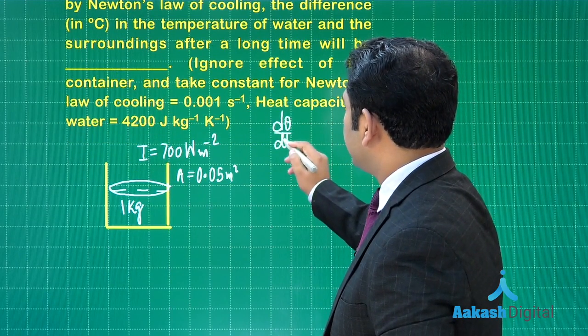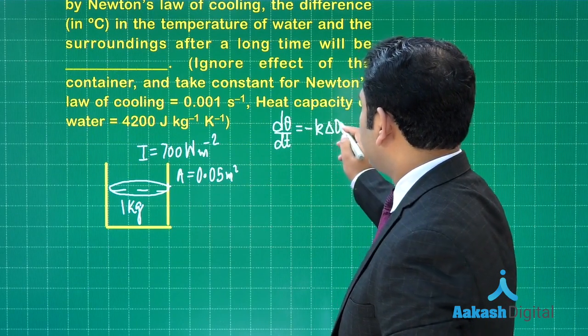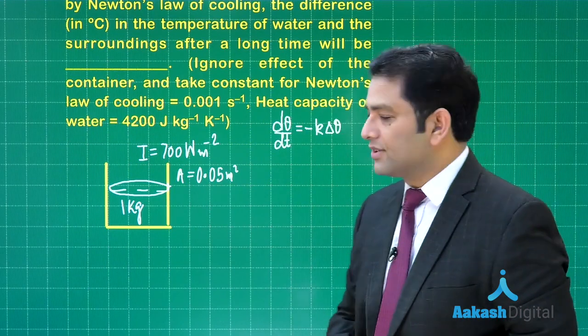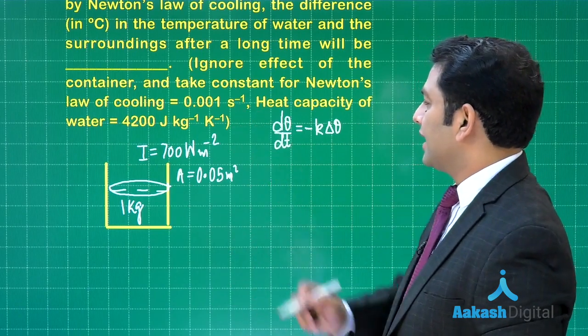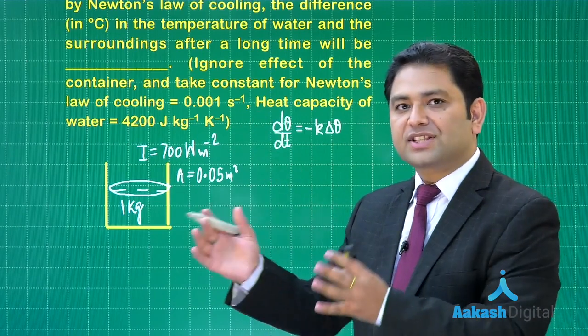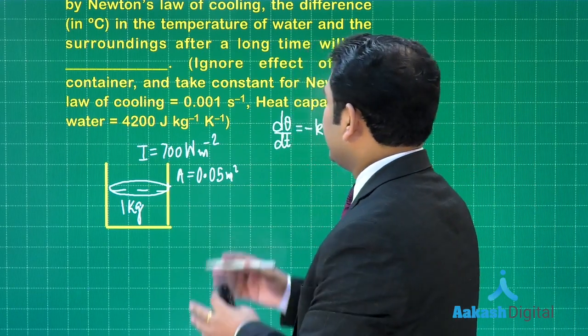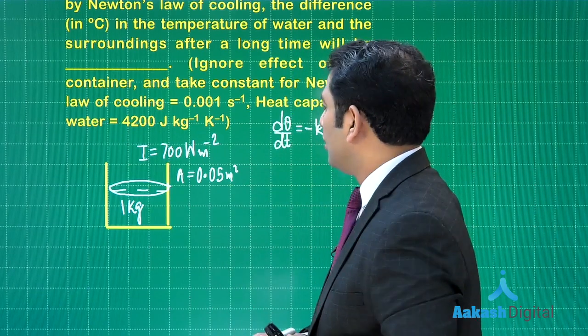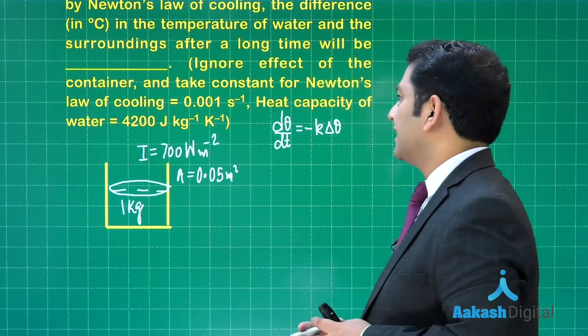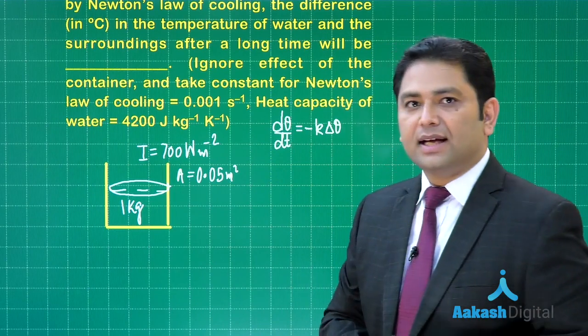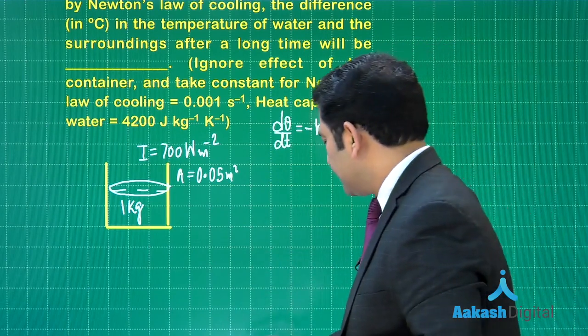That means while we calculate Newton's law of cooling, d theta by dt is minus of k multiplied by delta theta. So this particular k is 0.001, and look at the unit per second, the constant for rate of cooling. Heat capacity of water, 4200 joule per kg per kelvin has been given. Now let us see how we can do that.